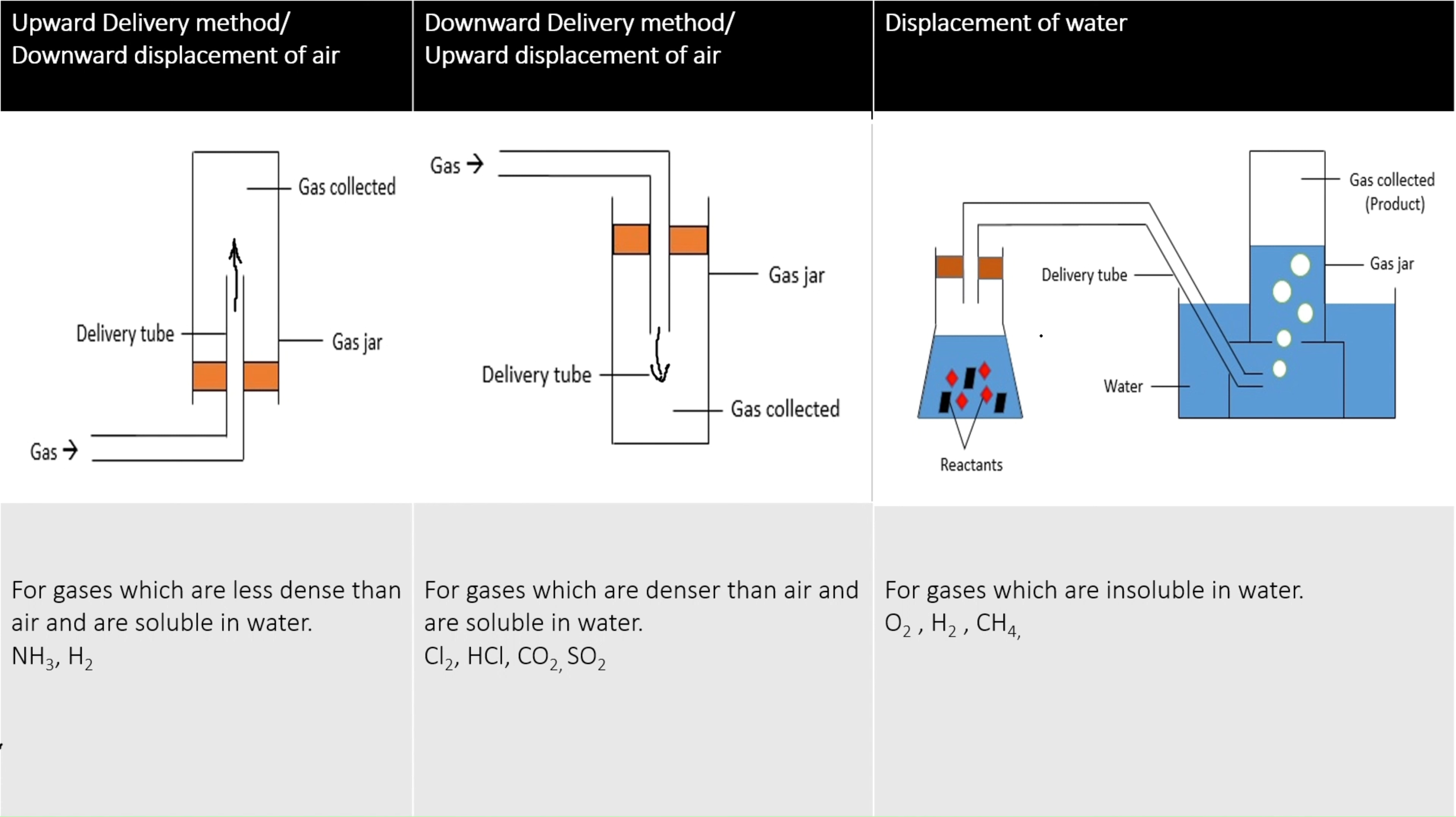There are three ways by which gases can be collected. The first one is the upward delivery method, or the gas can be collected by the downward displacement of air. The gases which are less dense or lighter than air and they are insoluble in water, they move up, they rise up. The gases which are denser than air, they always move down. The third method is displacement of water or collection of gas over water. This method is applicable for gases which are insoluble in water. These gases bubble out through water and are collected in the gas jar.